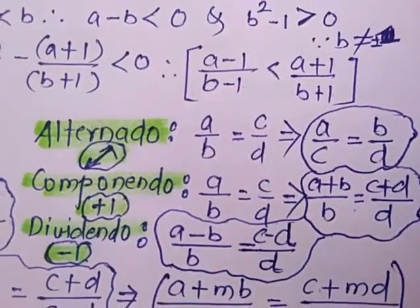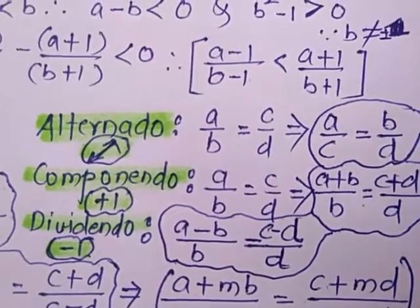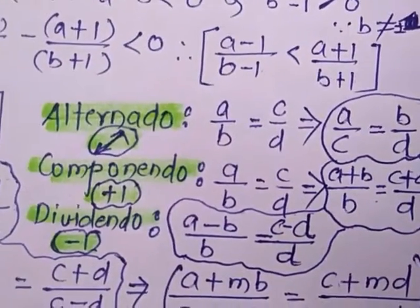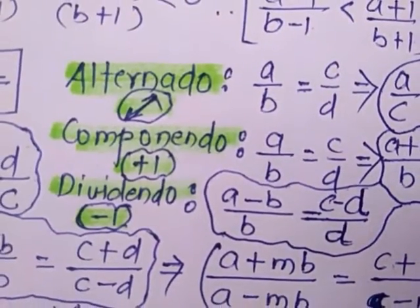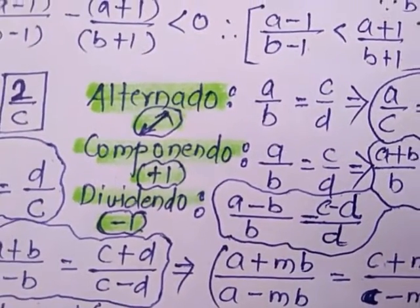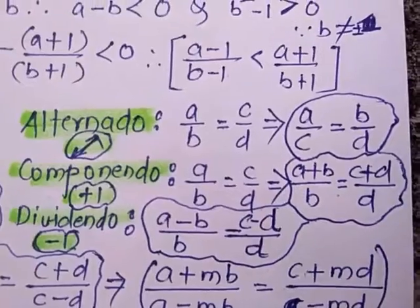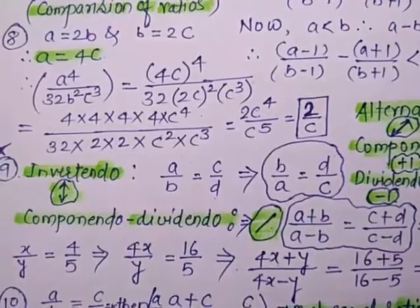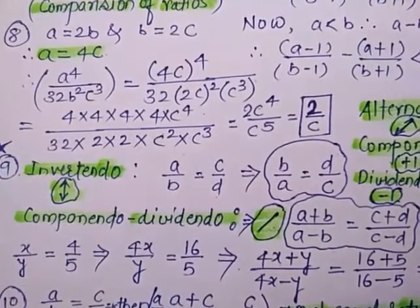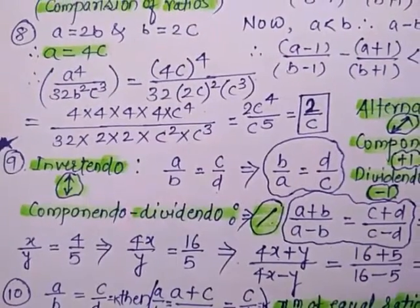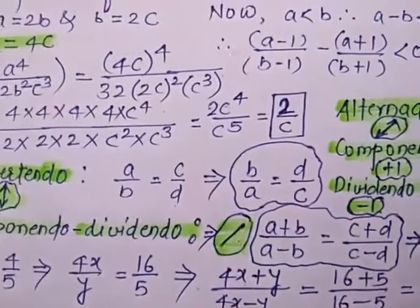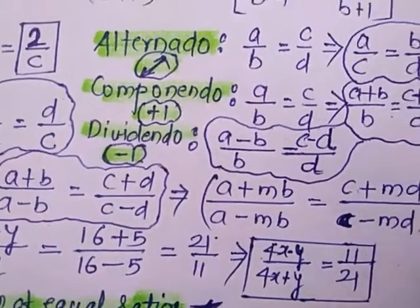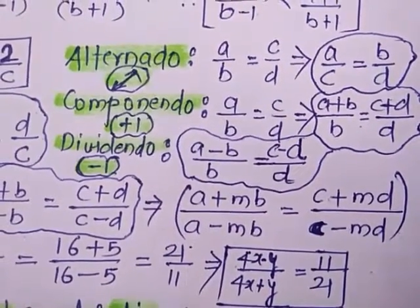In componendo, we get (A+B)/B is equal to (C+D)/D — there is addition. In dividendo, by subtracting 1 from both sides, we get (A−B)/B is equal to (C−D)/D — there is subtraction. Componendo and dividendo together gives (A+B)/(A−B) is equal to (C+D)/(C−D). These are the equal ratio properties, and we can apply them for M numbers.